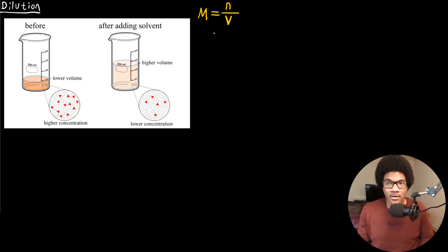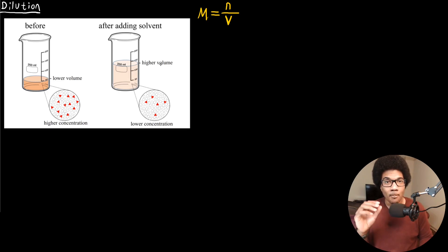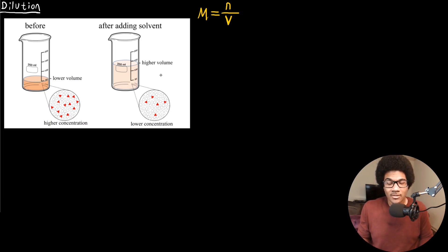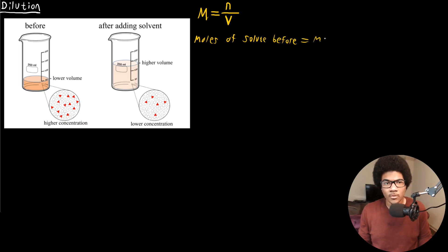One key thing to note is that when you add more solvent, you're not changing the amount of solute — the amount of solute stays exactly the same. The only thing changing is the amount of solvent. So the number of moles of solute before dilution is equal to the number of moles of solute after dilution.